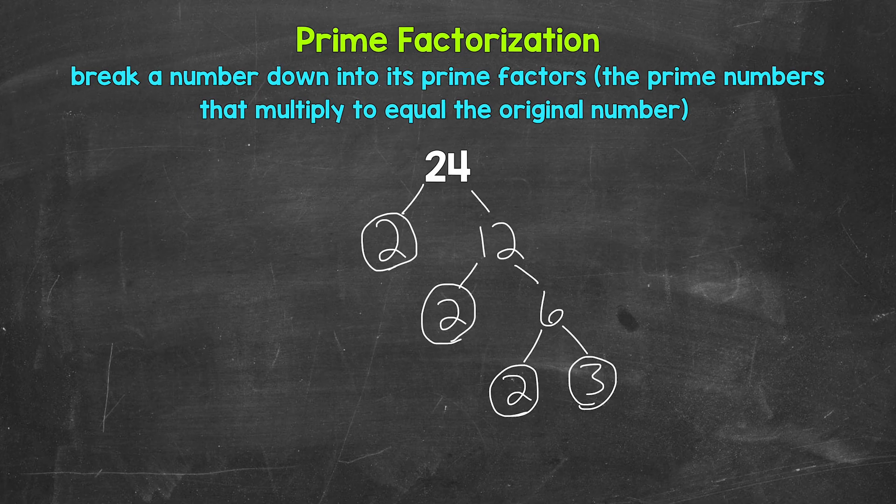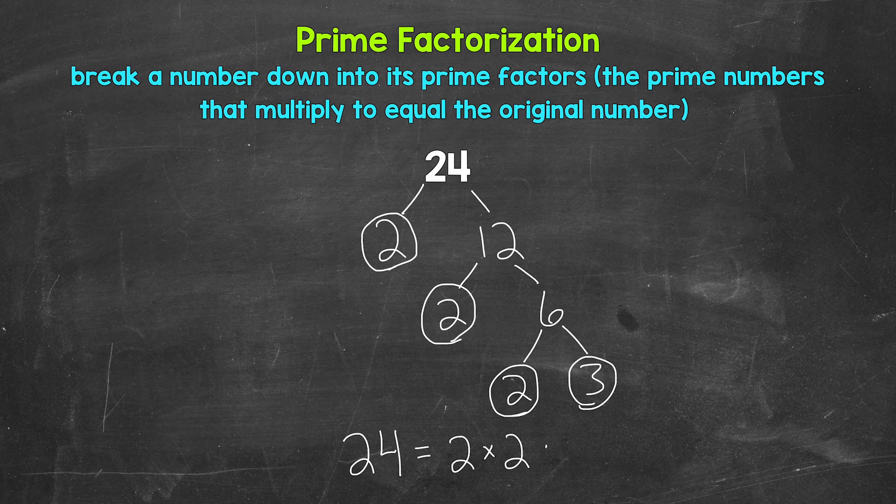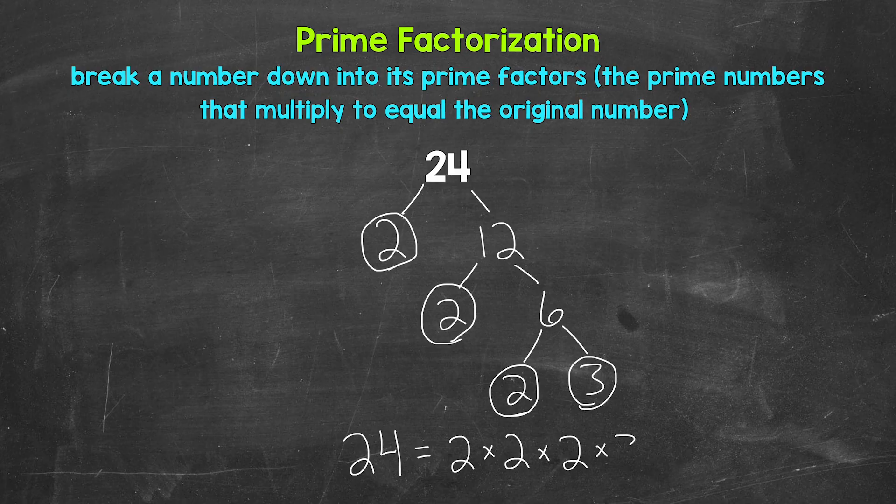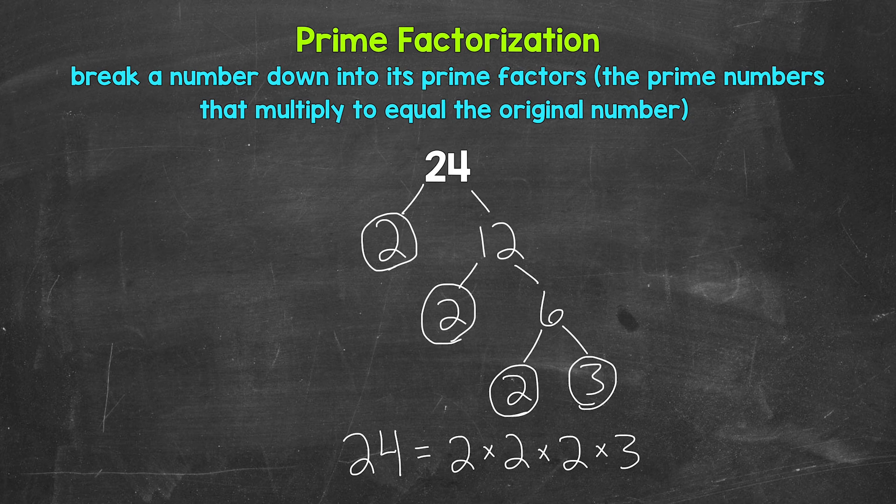We can write this out as 24 equals, and I'm going to write our prime numbers in order from least to greatest. We have two times two times two times three. If we have the correct prime numbers, they will multiply to equal our original number. Let's check. Two times two is four, times two is eight, times three is 24. So we are correct.